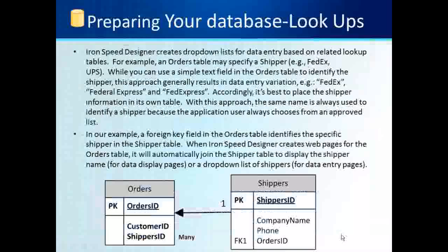Let's talk about lookups. IronSpeed Designer creates drop-down lists for data entry based on related lookup tables. For example, an orders table may specify a shipper, a specific FedEx or UPS. While you can use a simple text field in the orders table to identify the shipper, this approach generally results in data entry variations. For instance, FedEx, Federal Express, FedExpress — you get different variations of what type of shipper it is, and it should only be one.